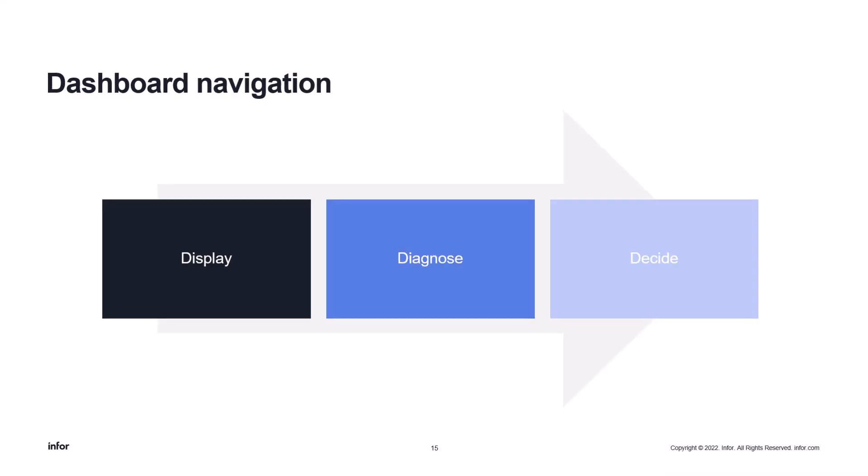It's time to put our information into dashboards. In the methodology we have three levels of dashboards. We have Display — the highest level, the overview. We have Diagnose, which gives you more detail when you drill down from your display dashboard. And lastly we have Decide — the lowest level, usually list reports you can actually make decisions on.